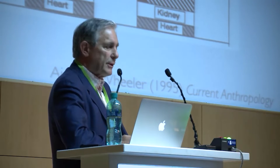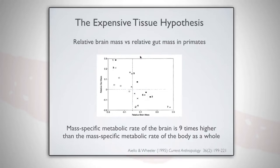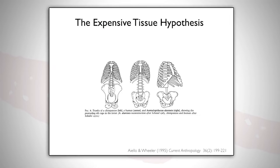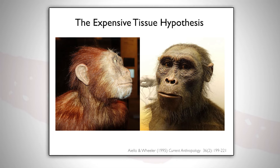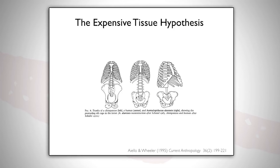So what happened to the guts? If you look at this picture, you can see that Homo sapiens has a hugely high brain-to-gut ratio. The metabolic rate of the brain is about nine times higher than the mass-specific metabolic rate of the body as a whole. Homo sapiens is way out on this end, way away from everything — these are other primates. And if you look at the chest cavities, you can see a chimpanzee over here has a big belly. This is Australopithecus afarensis — that's Lucy — again, a big belly. But the human belly starts to narrow because they gave up their guts to develop larger brains.